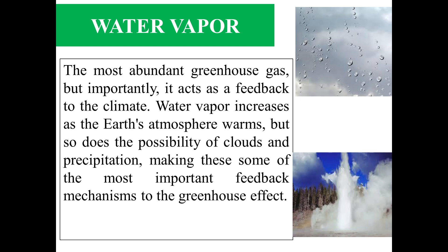Water vapor is the most abundant greenhouse gas but, importantly, it acts as a feedback to the climate. Water vapor increases as the Earth's atmosphere warms, but so does the possibility of clouds and precipitation, making this one of the most important feedback mechanisms to the greenhouse effect.